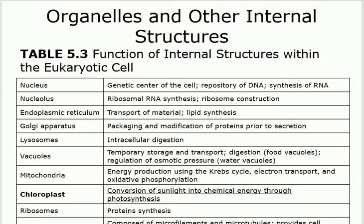This basically looks like our cells — the cells that we all know: nucleus, nucleolus, endoplasmic reticulum, and so on. The nucleus is in the center of the cell, it's the manager, and it contains the chromosomes and genetic material (DNA). The nucleolus is like the nucleus of the nucleus — a small organelle within the nucleus — and its function is to help make ribosomes and ribosomal RNA.